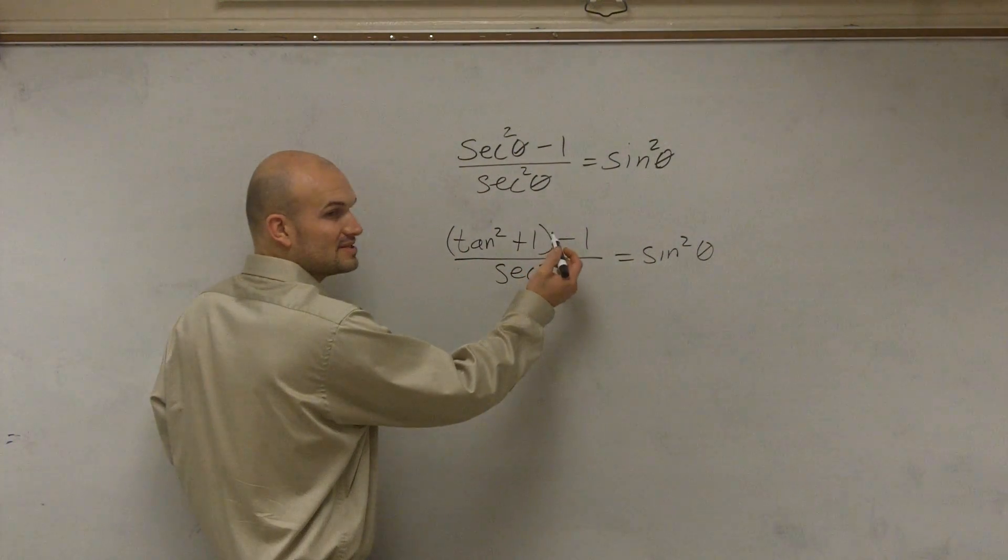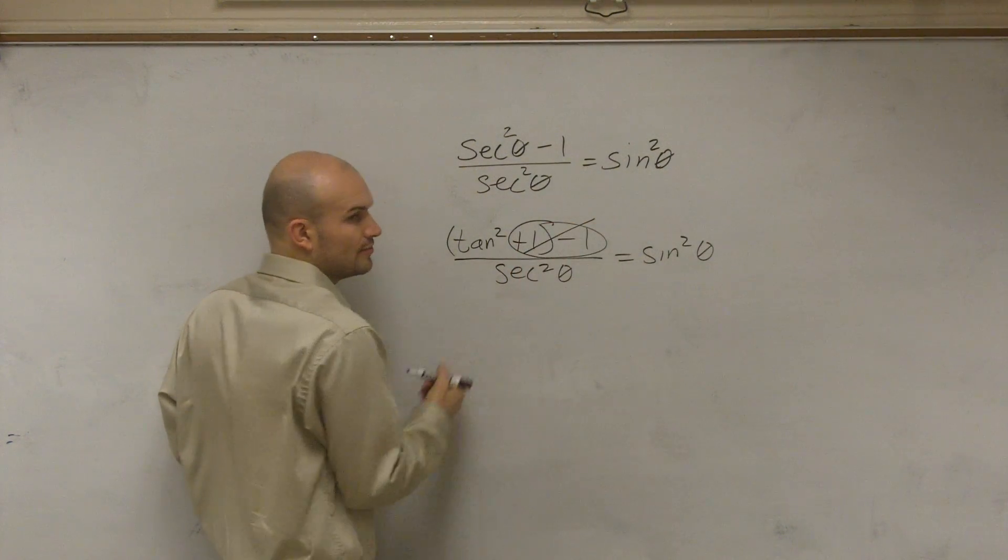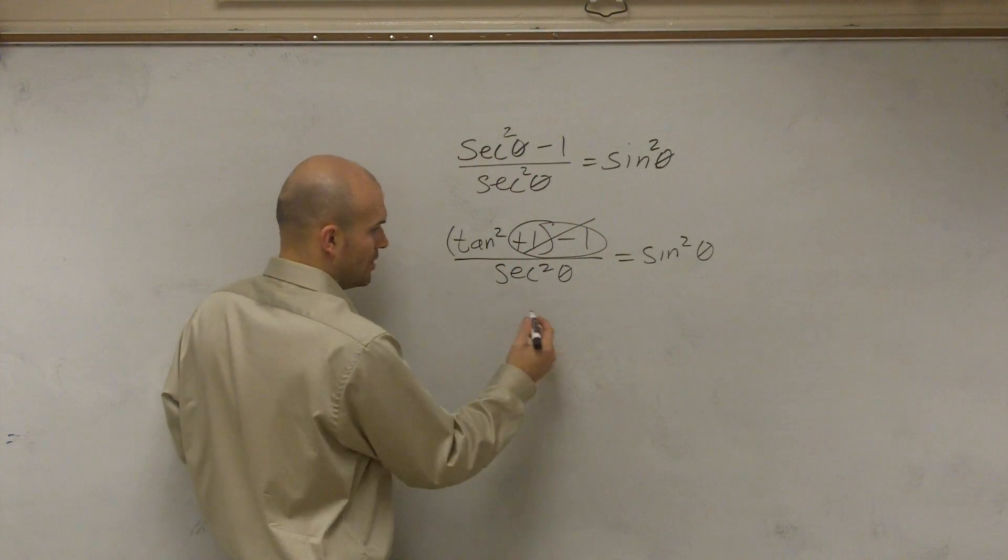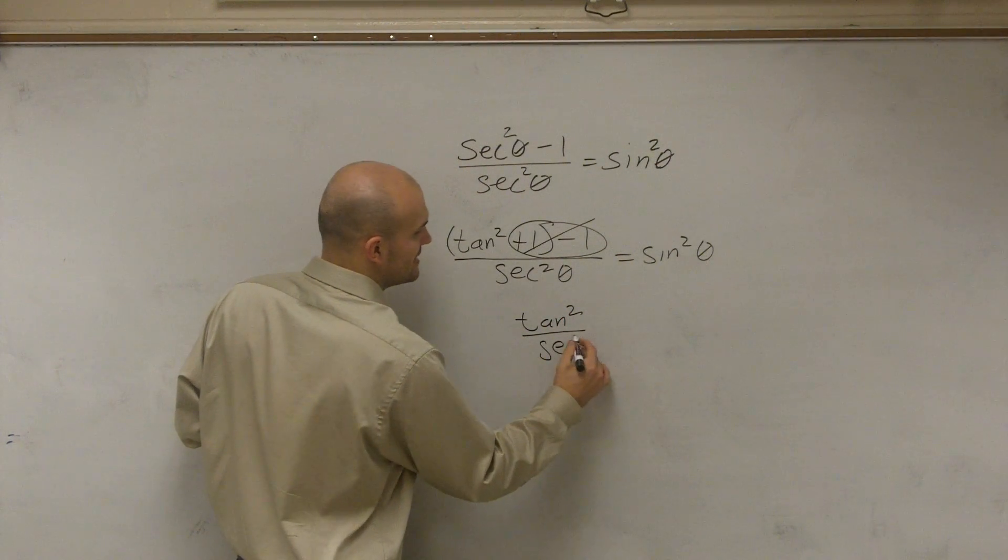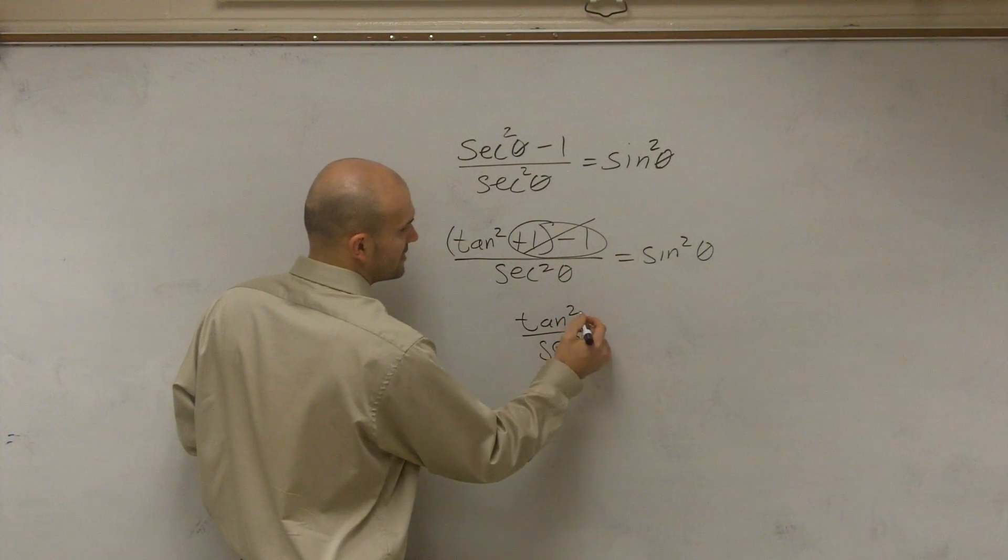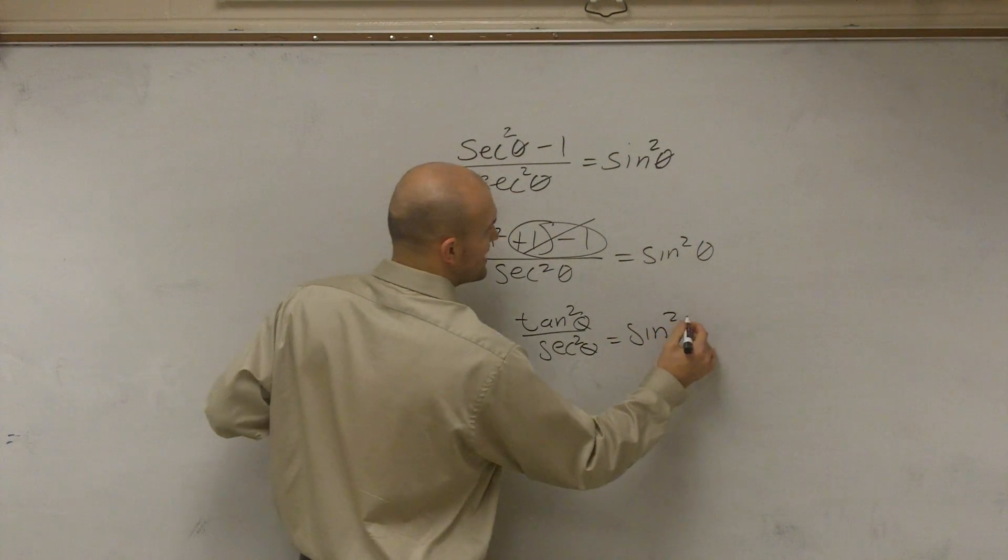Well, what happens, this is nice because now I know that my plus 1 and negative 1, those cancel out to 0. Therefore, I'm now left with tangent squared divided by secant squared, these are all of theta, is equal to sine squared of theta.